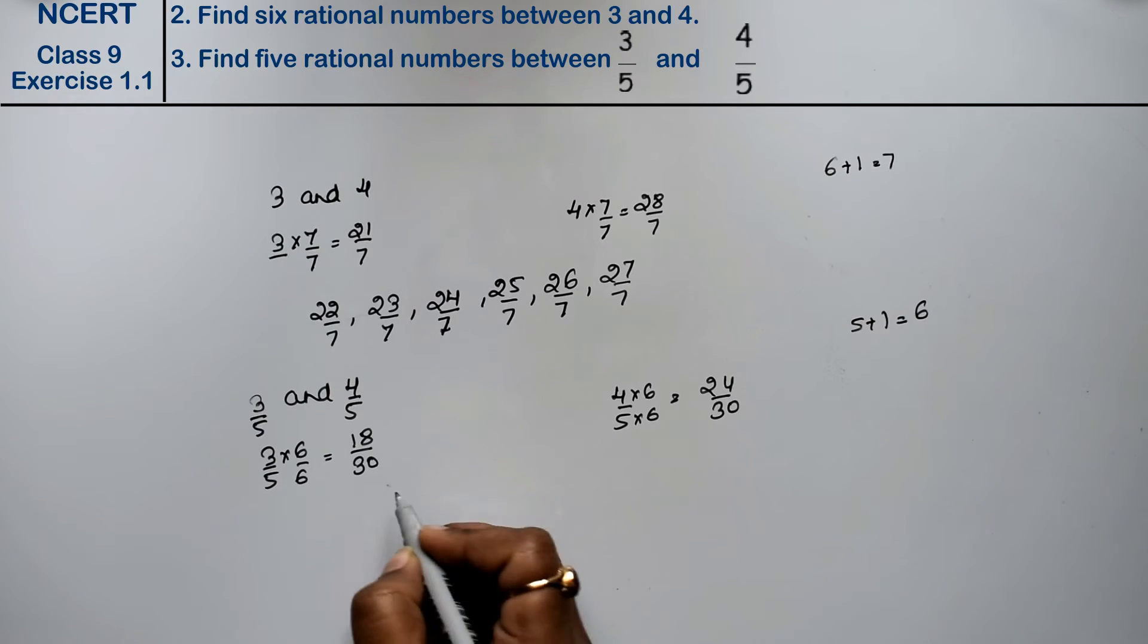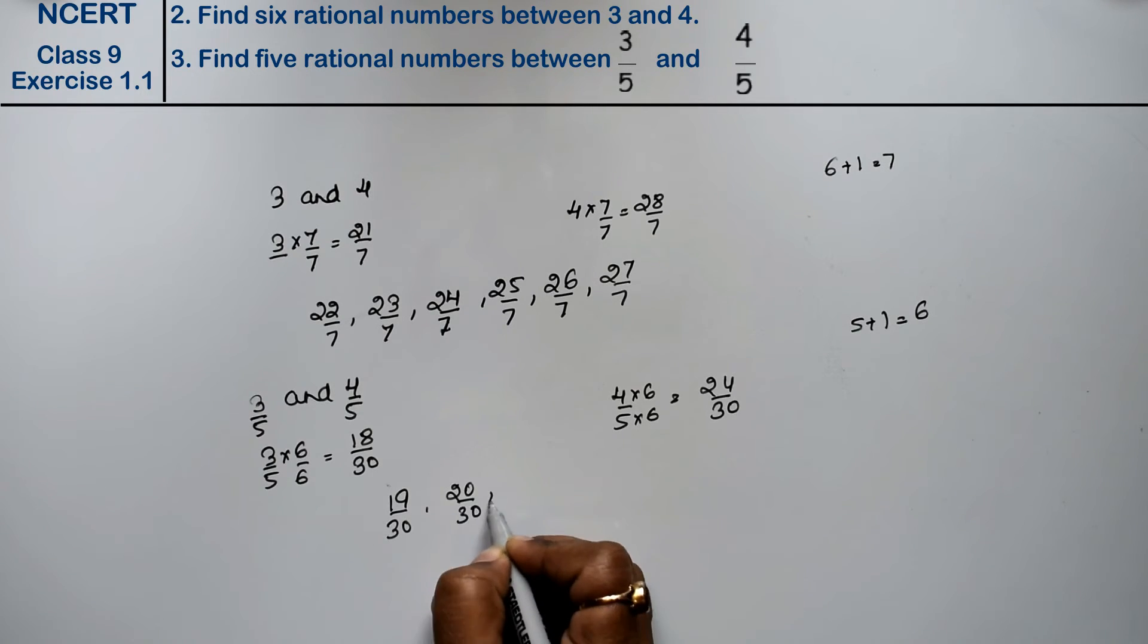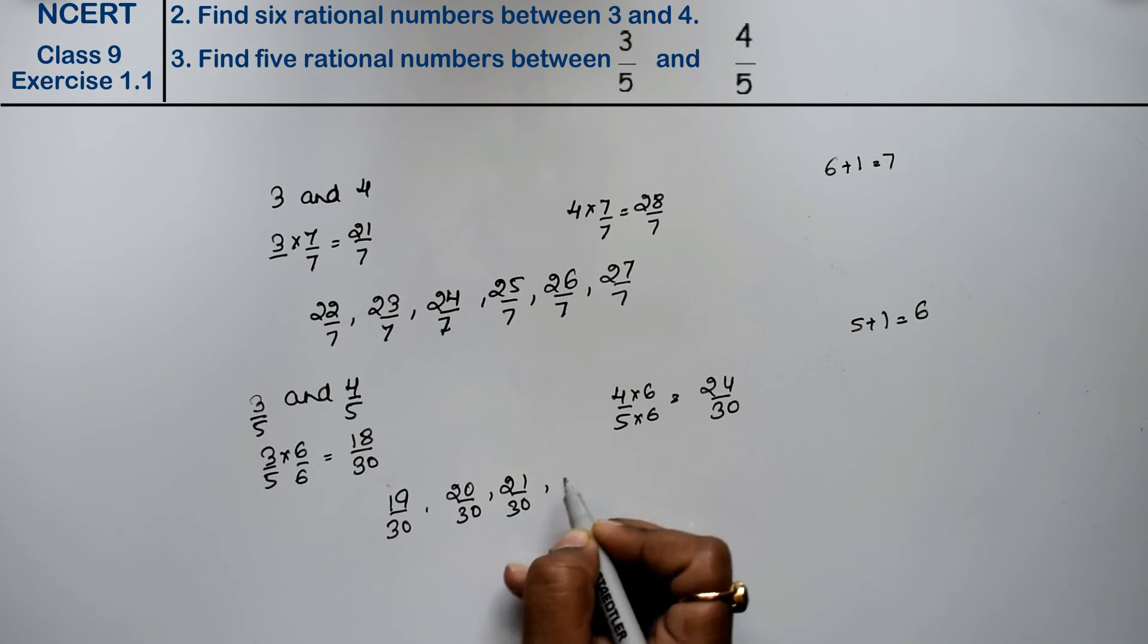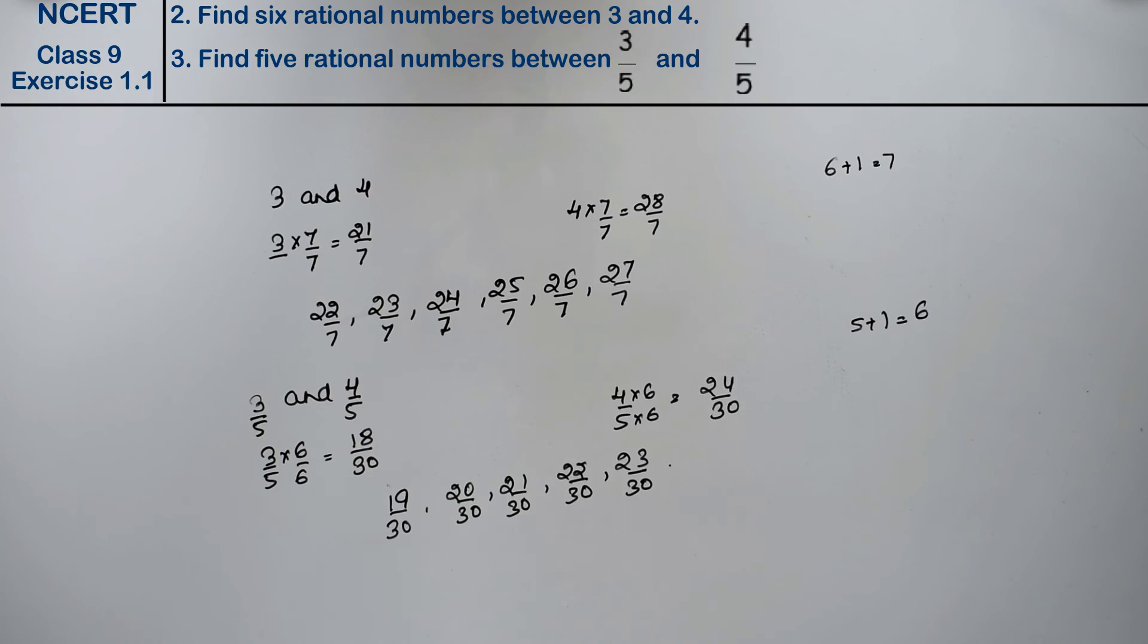Right friends? So, the answer is 19 upon 30, 20 upon 30, 21 upon 30, 22 upon 30, 23 upon 30 is the answer.